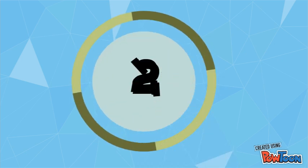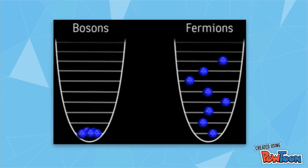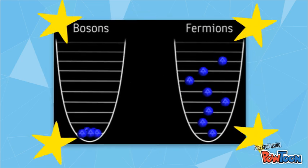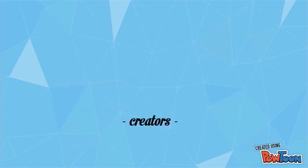There are two types of particles that we're going to talk about: fermions and bosons. Bosons do not obey this rule. That means that at any given state or time, an infinite number of bosons can be in the same place. Fermions do obey this rule.